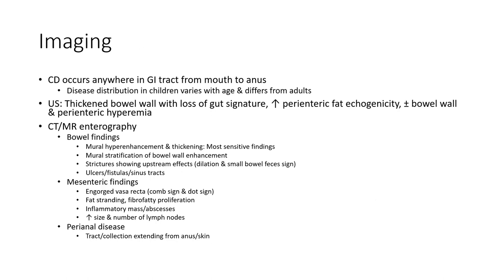CT enterography bowel findings: mural hyperenhancement and thickening — the most sensitive finding — mural stratification or bowel enhancement, stricture with upstream effect, fistula and sinus tract. Mesenteric findings: engorged vasa recta, comb sign, fat stranding, fibrofatty proliferation, inflammatory mass, abscess, and increased size and number of lymph nodes.